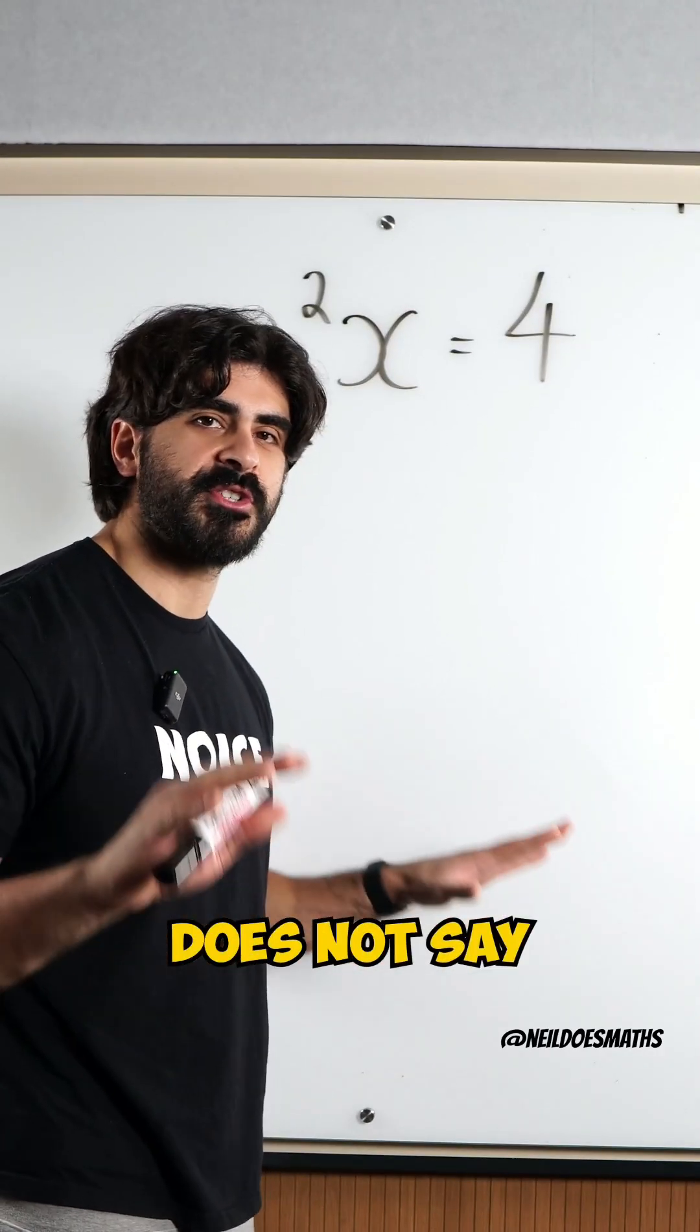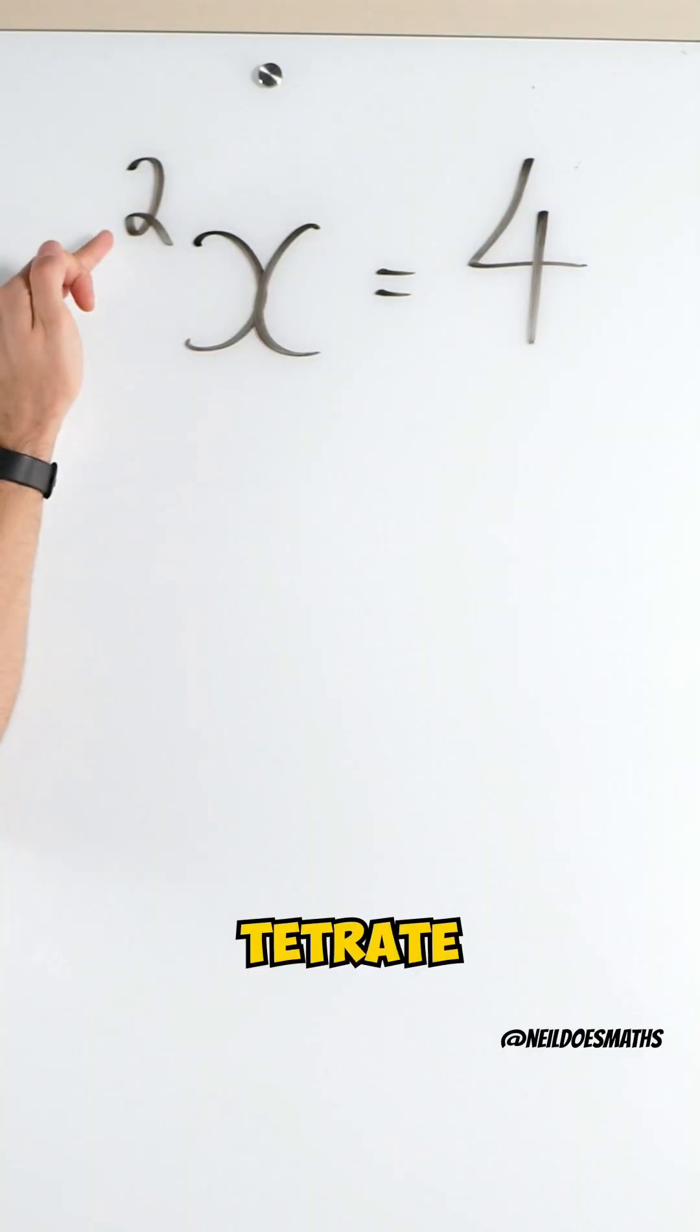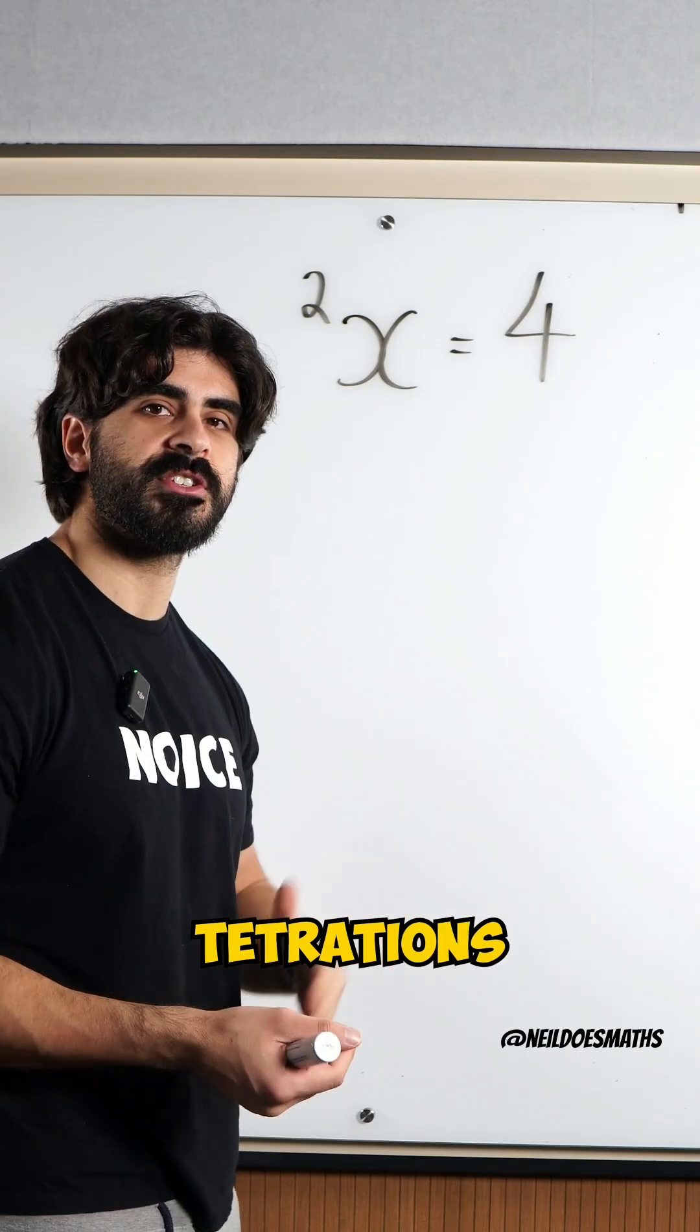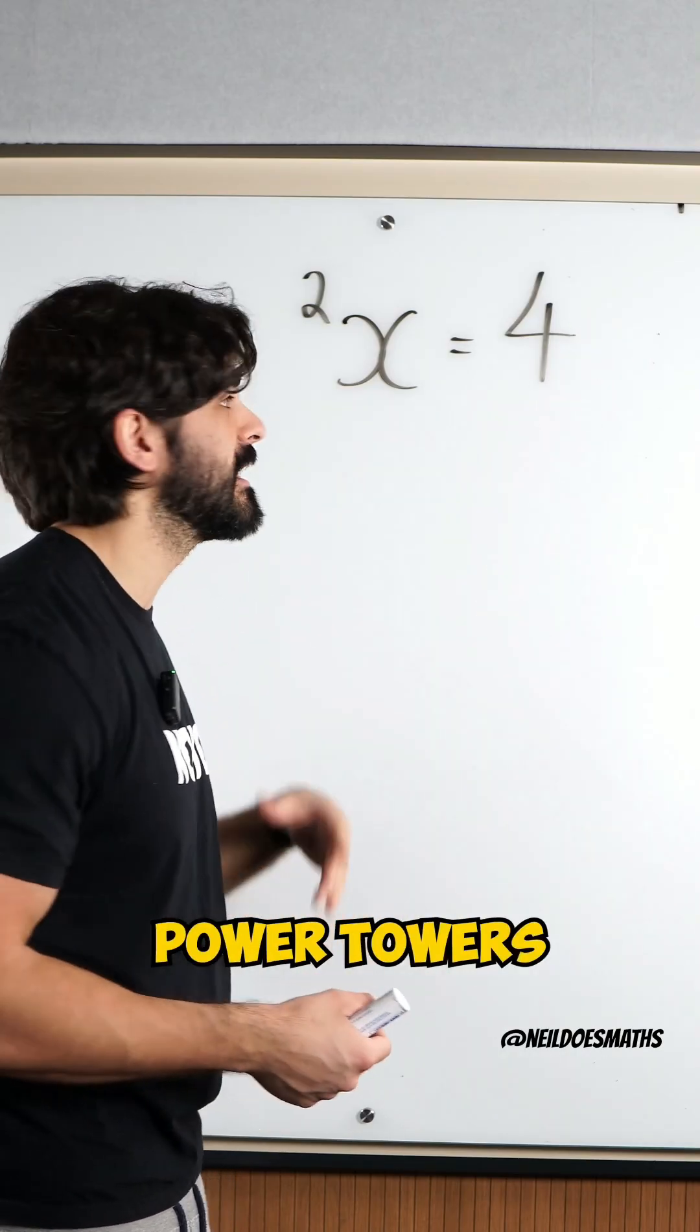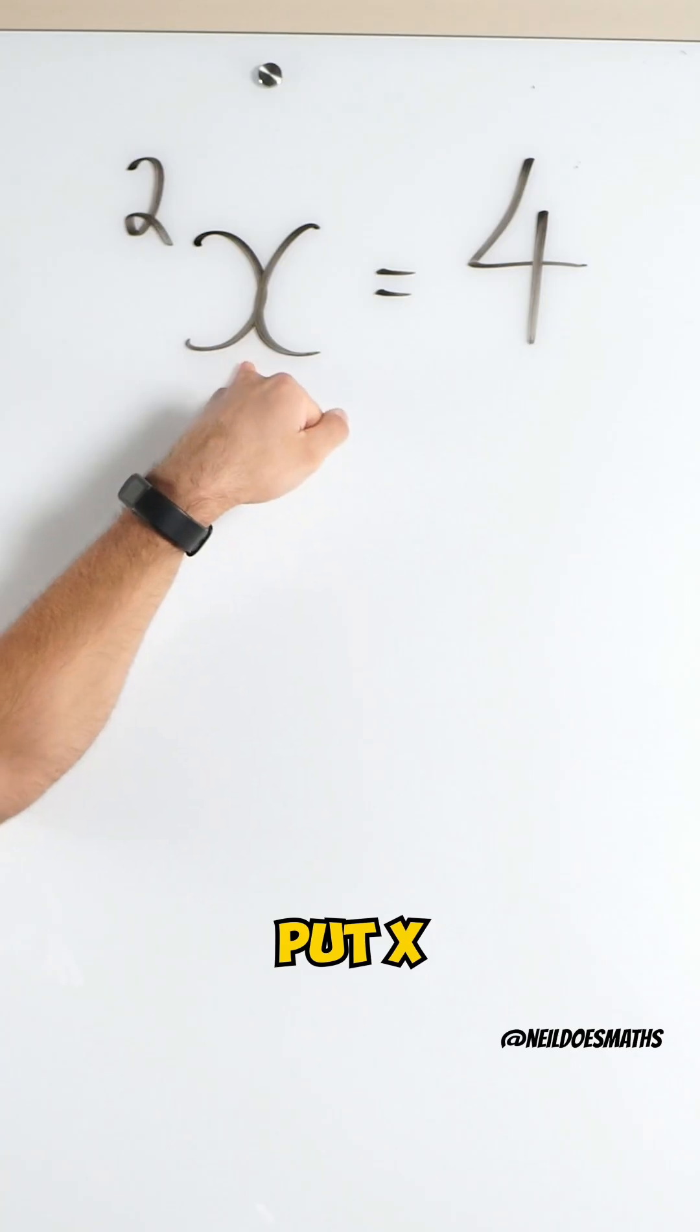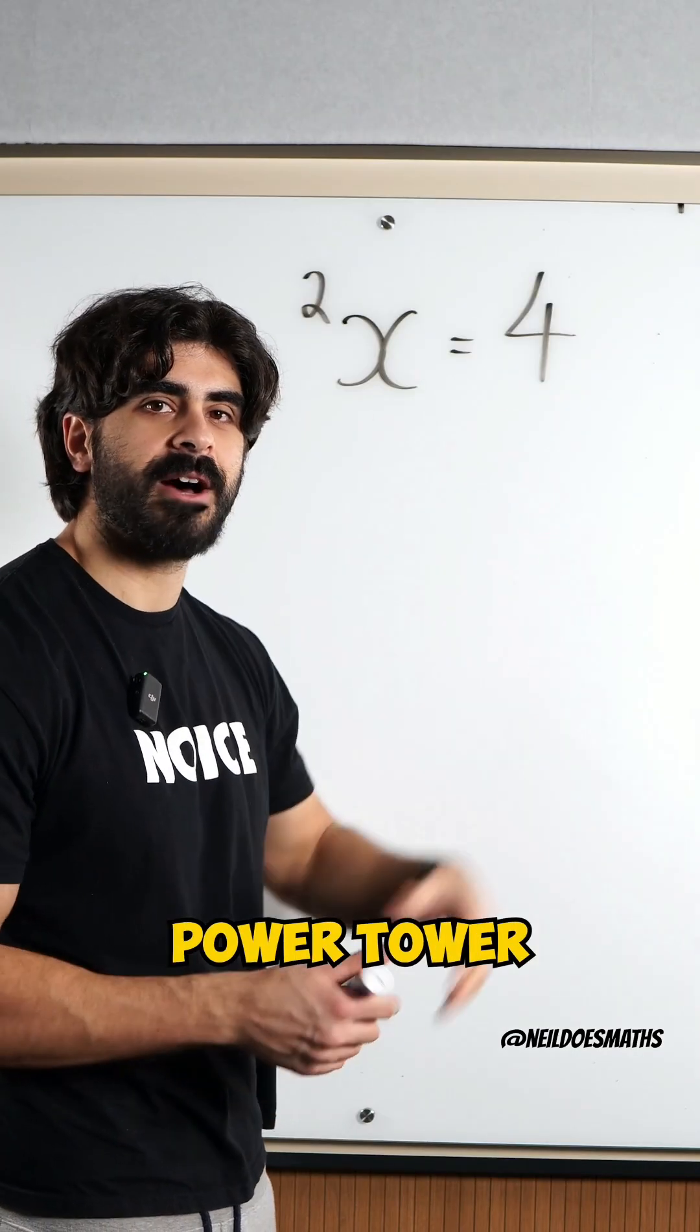This does not say x squared. It says tetrate x twice. Tetrations are power towers. It's saying put x as part of a power tower twice.